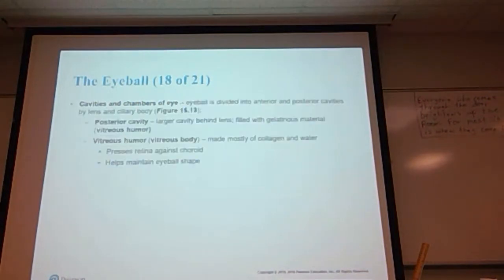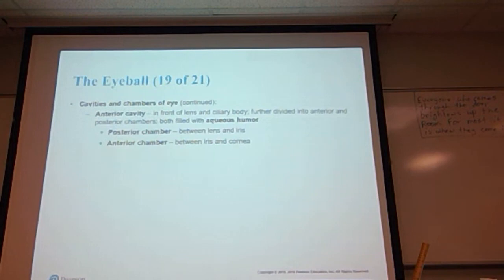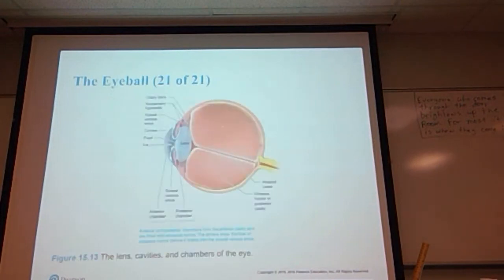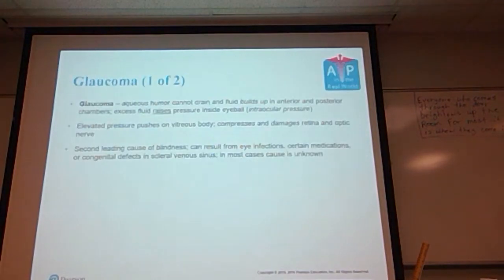Here's the thing about these two humors: the vitreous humor found in the posterior cavity cannot be replaced if it is lost due to some trauma. The aqueous humor, on the other hand, is continually made and regenerated. Again, here is the vitreous humor in the posterior cavity—it's what gives the eyeball its overall shape. Here is the posterior chamber of the anterior cavity, and here is the anterior chamber of the anterior cavity.